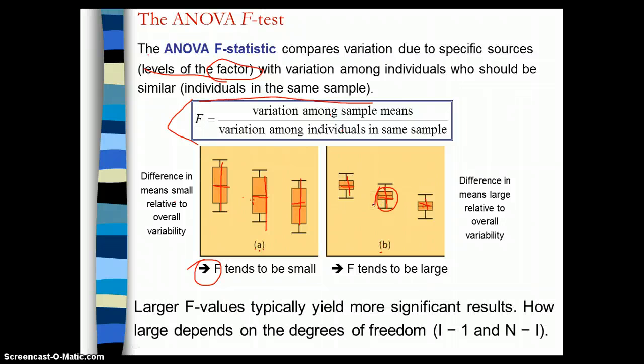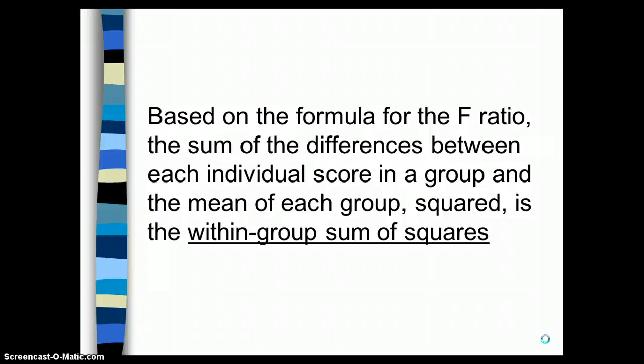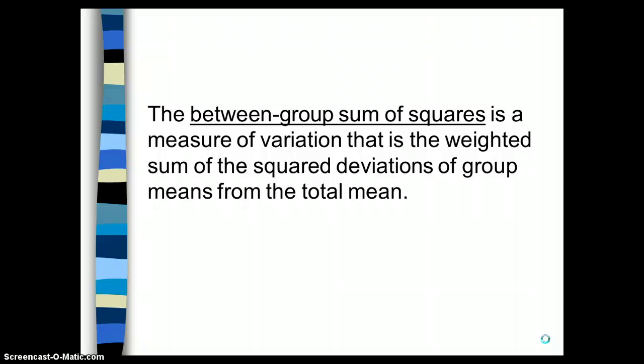Larger F values typically yield more statistically significant results, and how large it is depends on the degrees of freedom. Based on the formula for the F ratio, the sum of the differences between each individual score in a group and the mean of each group squared is the within group sum of squares. The between group sum of squares is a measure of variation that is the weighted sum of the squared deviations of group means from the total mean. So we've got within group sum of squares and between group sum of squares.